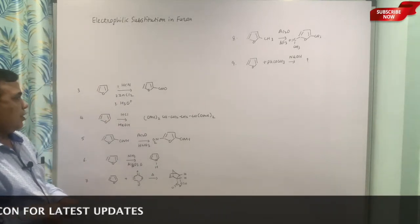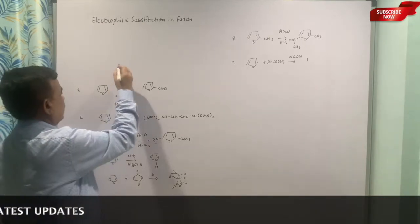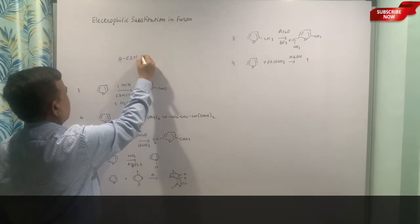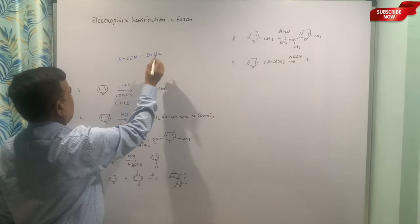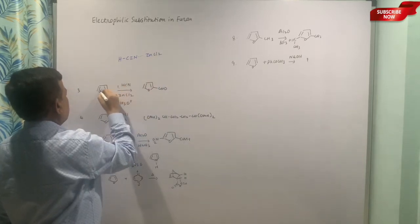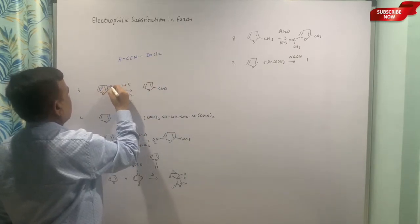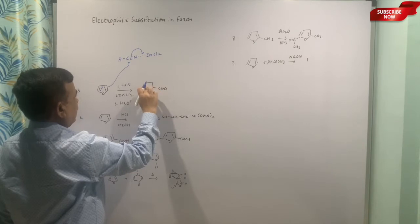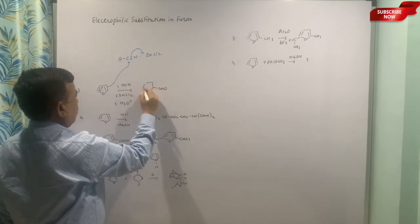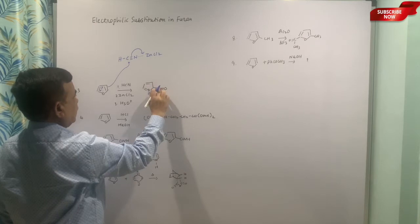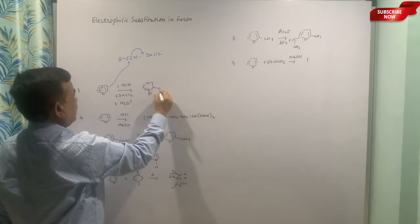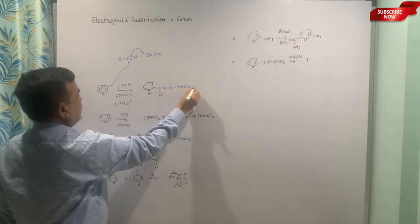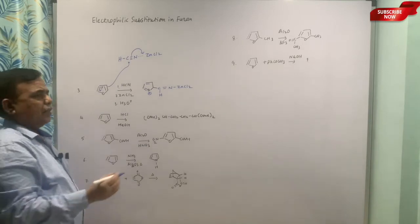The third example: this is with HCl and zinc. First of all, zinc will coordinate with this, and then because of that polarization of the bond, let me put double bond here, double bond here, and this will be CH=N. And then it is hydrolysis.